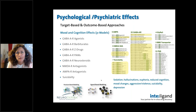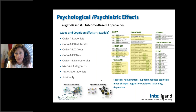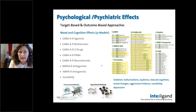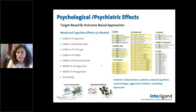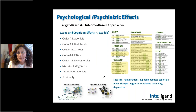We also have models for psychological and psychiatric effects, including mood and cognition effects. Here we have 31 models developed in the project. Mood and cognition effects include sedation, hallucinations, euphoria, reduced cognition, and mood changes like aggression, violence, suicidality, and depression. Some obvious troublemakers already known include GABA-A agonists, barbiturates, and certain drugs associated with sedation and hallucinations. Some of these are wanted effects, like sedation for GABA molecules, but if you're not working on GABA you may want to avoid these effects. We also address suicidality as an important adverse outcome, which I'll talk about later.